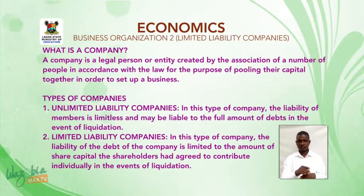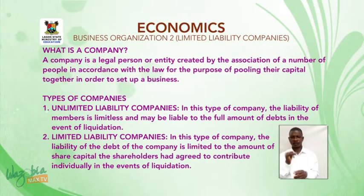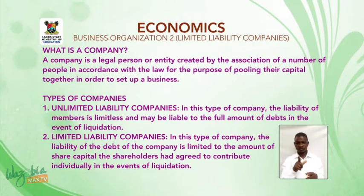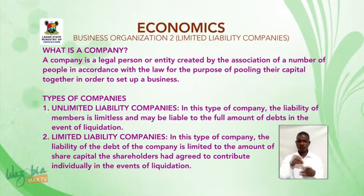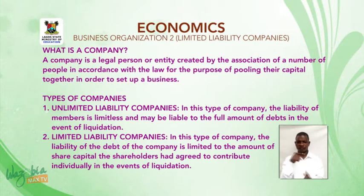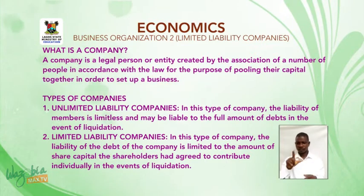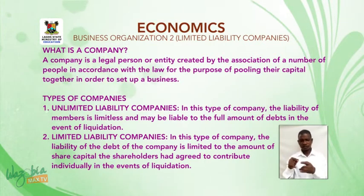Types of companies: 1. Unlimited liability companies — in this type of company, the liability of members is limitless and may be liable to the full amount of debt in the event of liquidation. 2. Limited liability companies — in this type of company, the liability for the debt of the company is limited to the amount of share capital the shareholders had agreed to contribute individually in the event of liquidation.